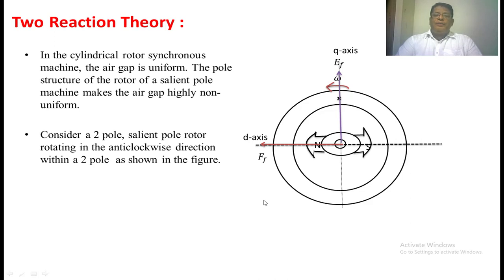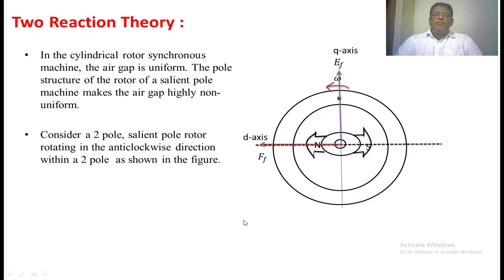Suppose we apply a pure capacitor load — the current leads EF, meaning the armature current comes on the d-axis in this direction. The armature MMF and armature flux will be in the same direction as the main field MMF and main field flux, so the net flux will be increased.